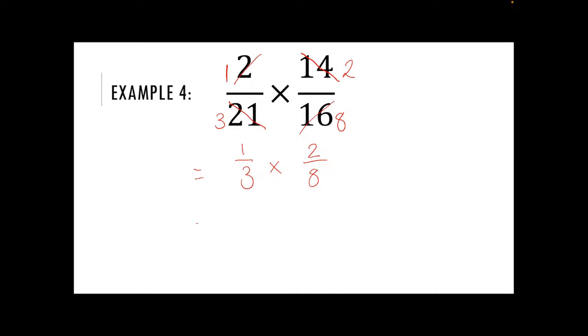These numbers are much nicer to deal with. So one times by two gives me two and three times by eight gives me twenty-four. And oh, look there, we can still simplify again. So always check that we can simplify our final answer. In this case, we can divide by two, top and bottom, to give us one twelfth.